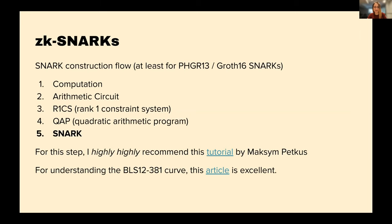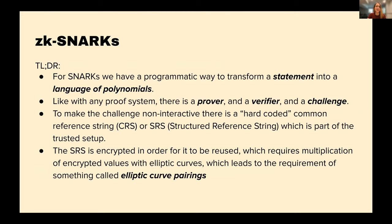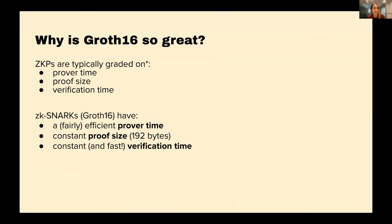There's also an article about the BLS12-381 curve — if you've ever heard of that and wondered what it is and why it's such a big deal, there's a great article explaining why it's used in Groth16. Long story short: a statement gets transferred into a language of polynomials, and there's a prover, a verifier, and a challenge. There's a hard-coded common reference string or structured reference string used as part of the challenge, and together these things create a proof system where a prover can create a zero knowledge proof that a verifier can then verify.